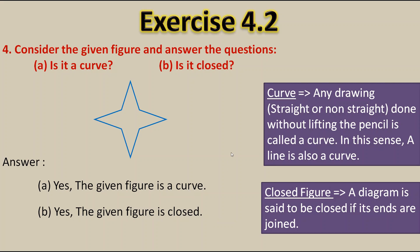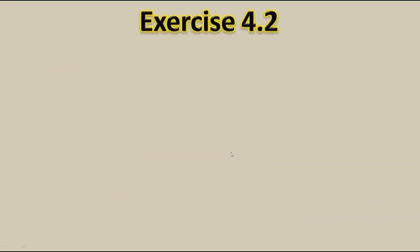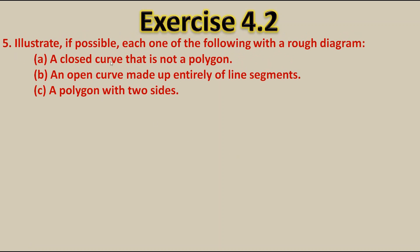Now let's move to the fifth question: Illustrate, if possible, each one of the following with a rough diagram. The first one is a closed curve that is not a polygon. Closed curve means the ends should be joined, and not a polygon means we should not draw any line segments. The diagram for the first part is a curved shape — since it is not made up of line segments it is not a polygon, and the ends are joined therefore it is a closed curve.